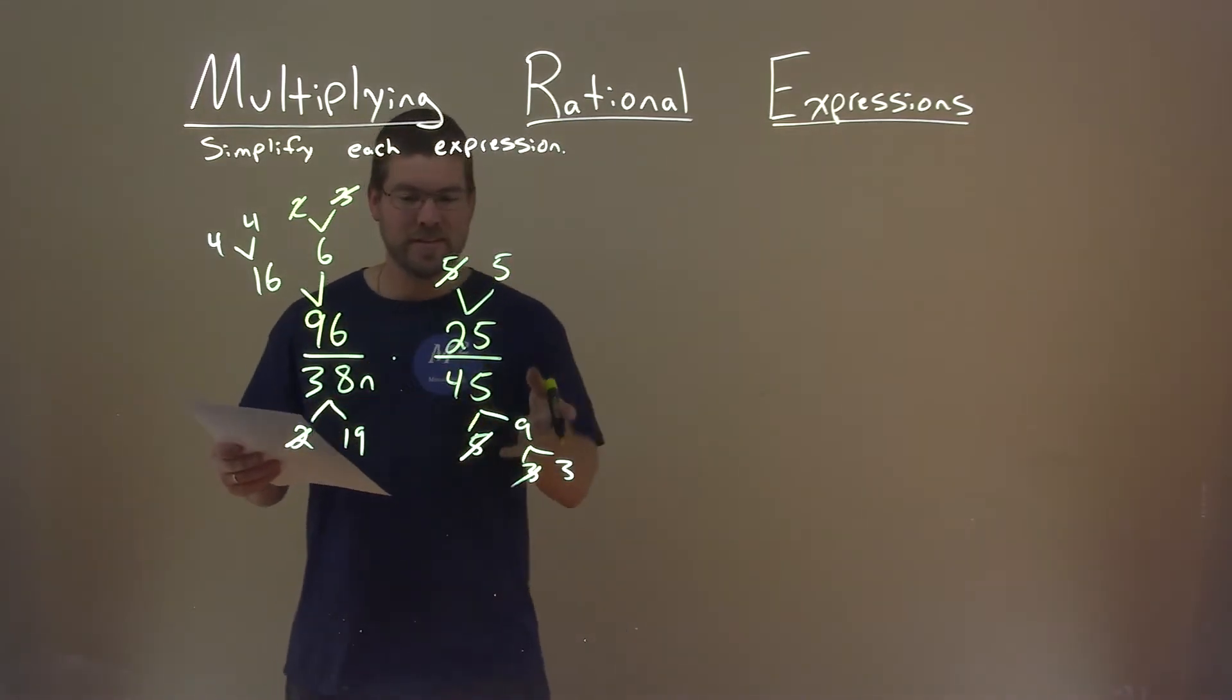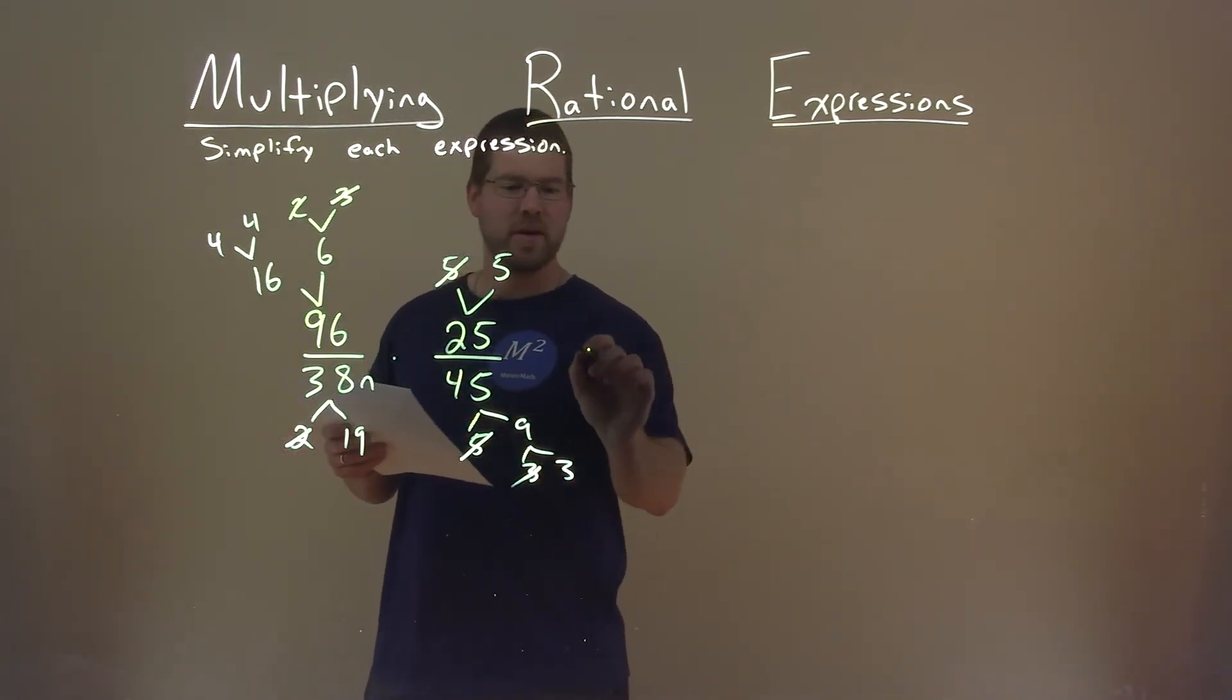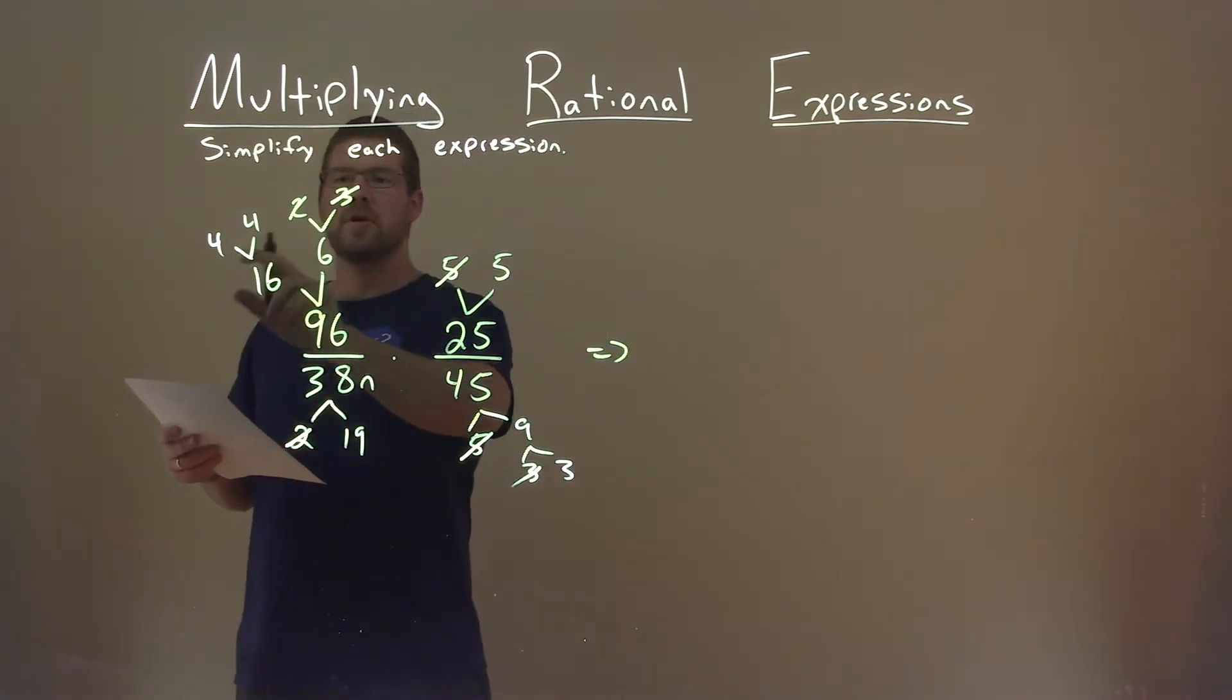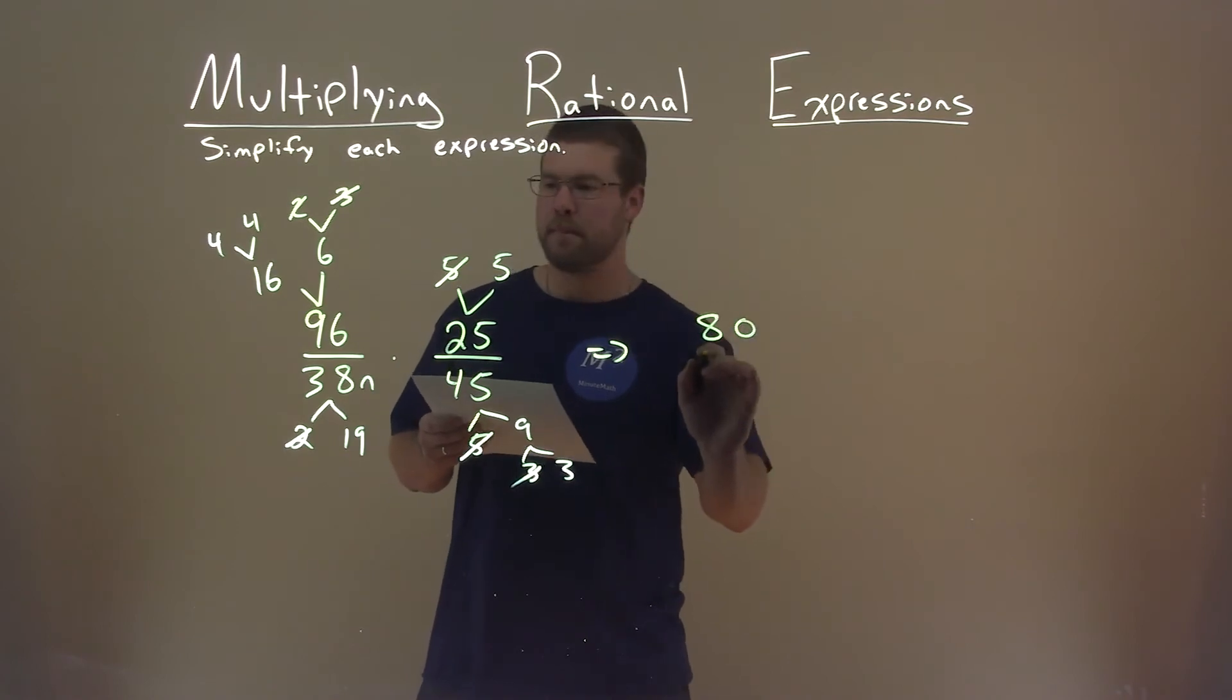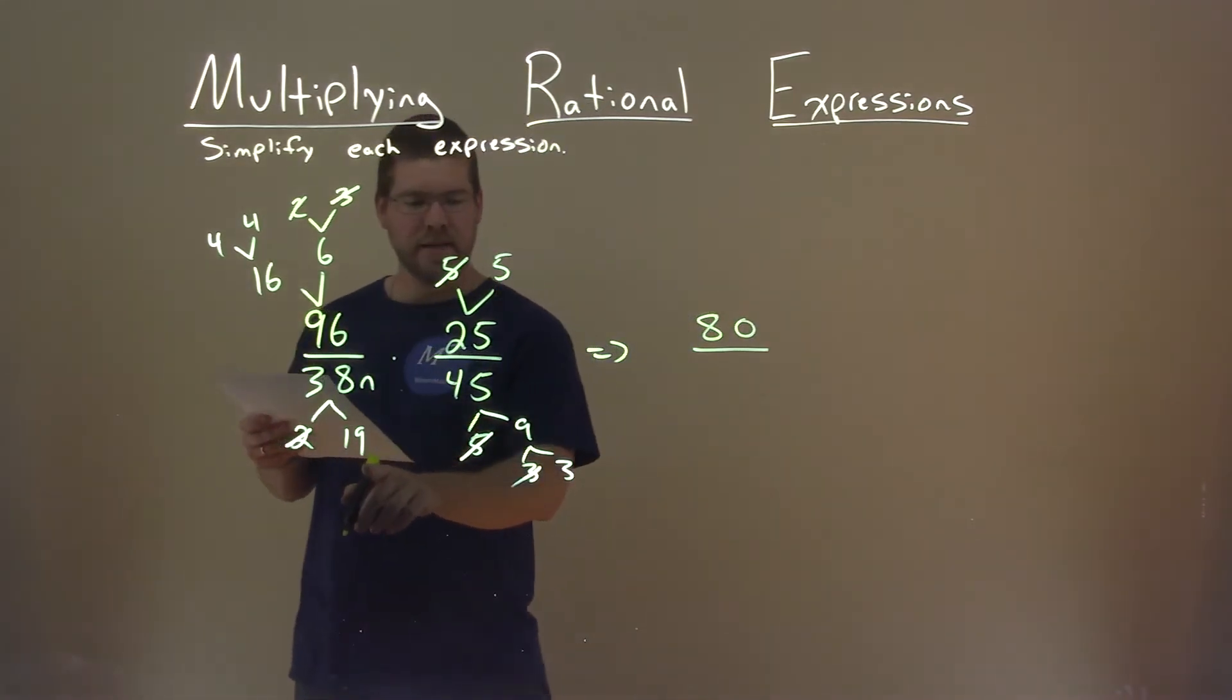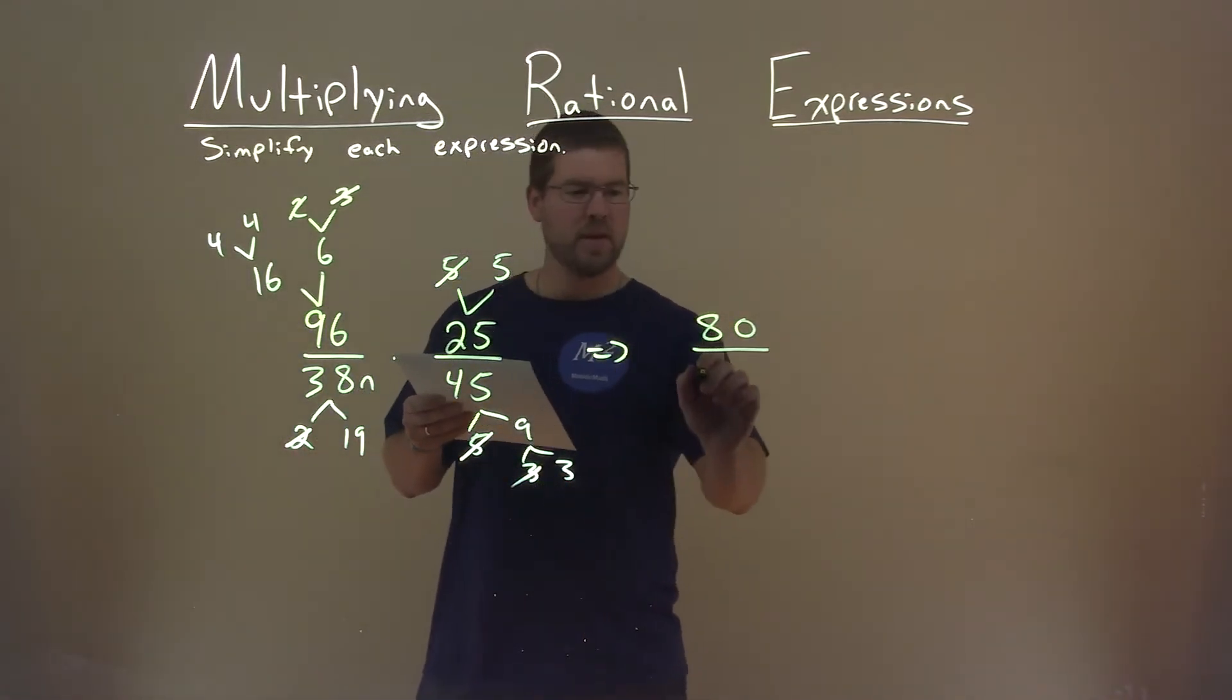Anyway, so now we're basically done. There's nothing else that cancels out. So we can multiply them out. 4 times 4 times 5 comes out to be 80 divided by 19 times 3, which is 57.